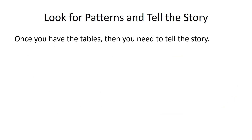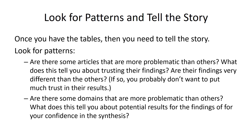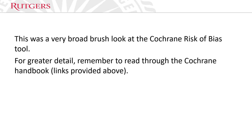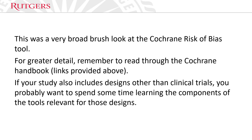Once you have the tables, then you need to tell the story. Look for patterns — are there some articles that are more problematic than others? What does this tell you about trusting your findings? Are there findings very different from others? If so, you probably don't want to put much trust in their results. Are there some domains that are more problematic than others, and what does this tell you about your confidence in the synthesis? This was a broad brush look at the Cochrane Risk of Bias tool. For greater detail, read through the Cochrane Handbook, or if you're using a different tool, read its documentation. If your study also includes designs other than clinical trials, you probably want to spend some time learning the components of those tools relevant for those designs.